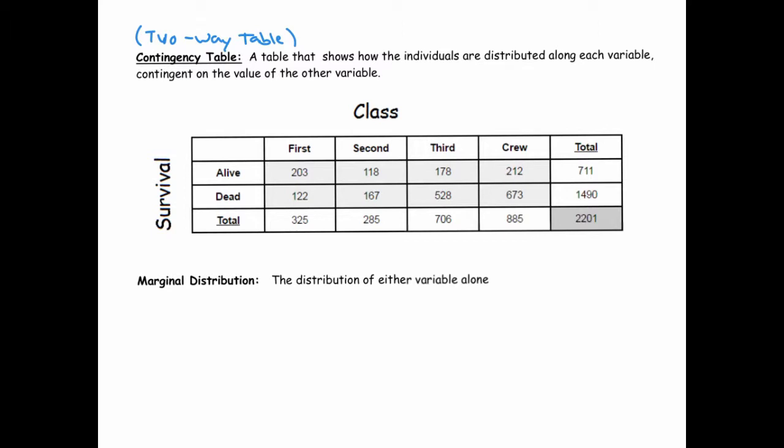And we see that each of the instances of the variable class - first, second, third, and crew - we can see how those are distributed along the other variable survival. So there's a lot of information in this simple two-way table.